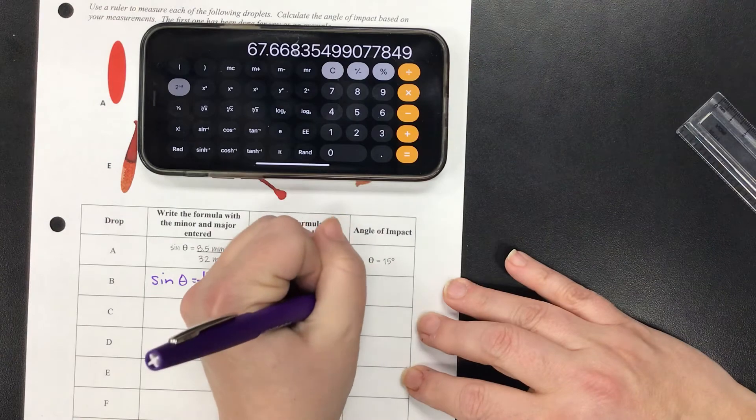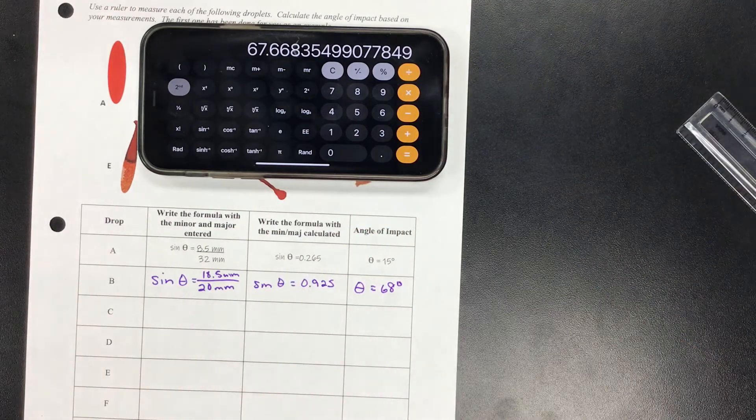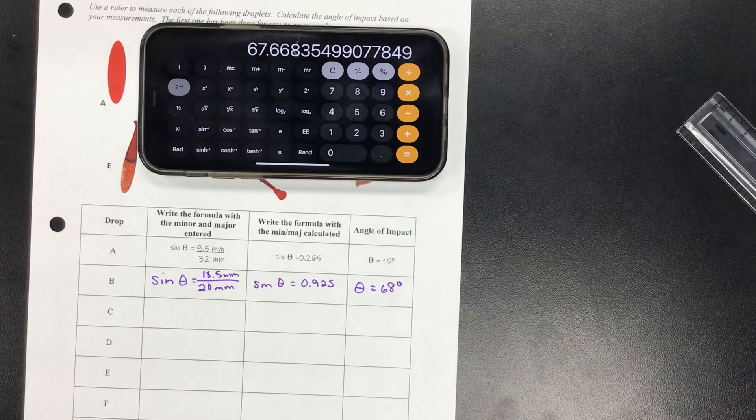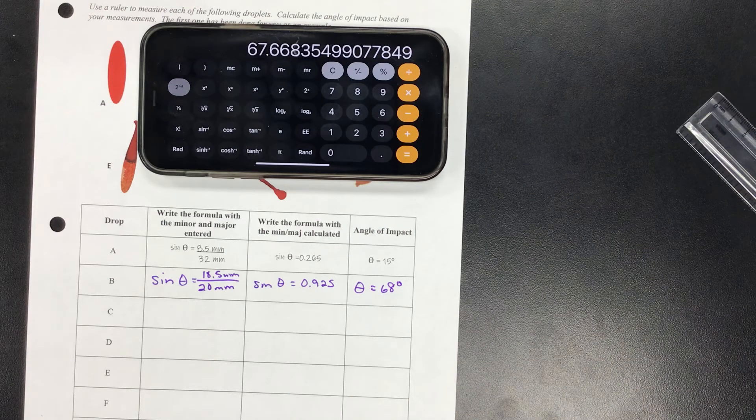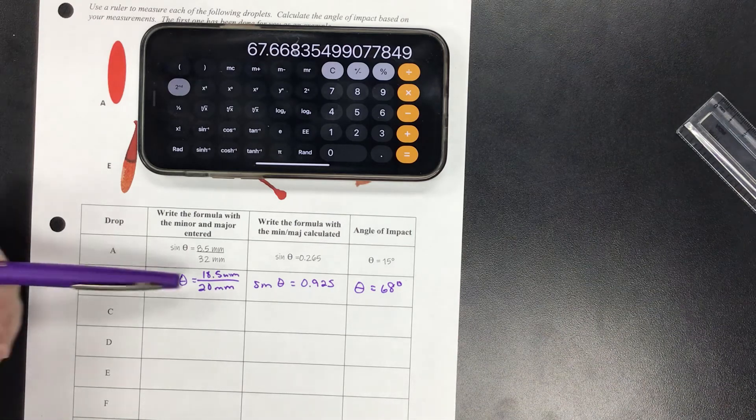And I've got 67.668..., so I'm going to call that θ = 68 degrees. Hopefully you got something close to that.